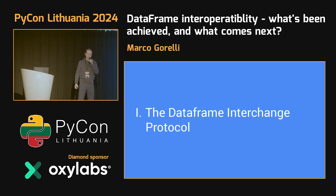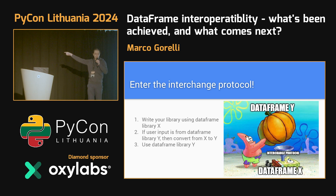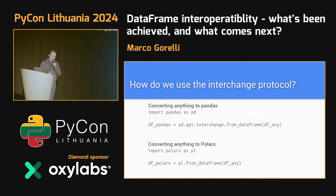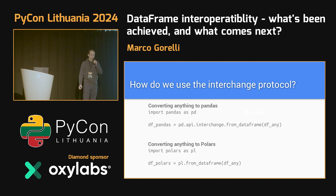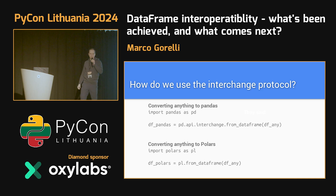Yes, we can address these, but not with the DataFrame Interchange Protocol. Nonetheless, I need to start talking about it for historical purposes. The idea behind the DataFrame Interchange Protocol is that you can write a library using DataFrame X. Your users might pass in a DataFrame Y, and then using the DataFrame Interchange Protocol, you've got a standardized way of converting between them. Is it easy to use? Yes. If you want to convert anything to pandas, you just use pandas.api.interchange.from_dataframe. If you want to convert anything to polars, you use polars.from_dataframe. One major annoyance is that although the function from_dataframe is standardized, there's no standardization about where this appears in the API.